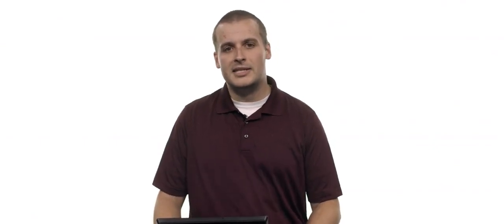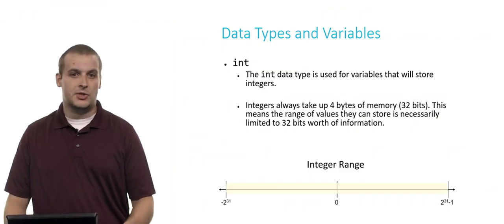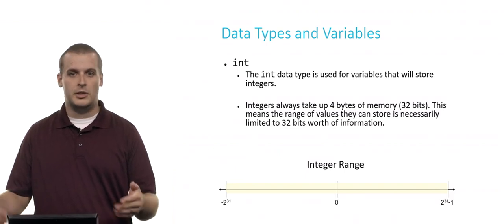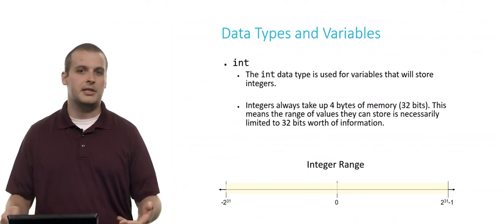So C comes with some built-in data types. And let's get familiar with some of those. And then afterwards, we'll also talk a little bit about some of the data types that we've written for you so you can use them in CS50. The first is int. The int data type is used for variables that will store integer values. So 1, 2, 3, negative 1, 2, 3, and so on.